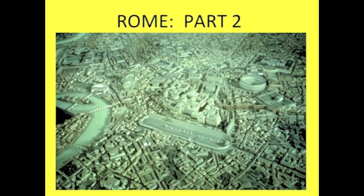If you walk around present-day Rome, you'll just stumble over things that are remnants of antiquity — things like the Colosseum, which we see right over here, things like the Circus Maximus, which we see right over here, but even things that don't seem like they're relics of Rome.